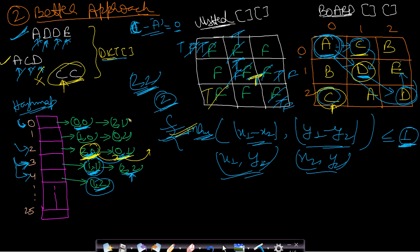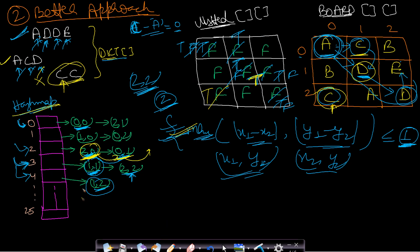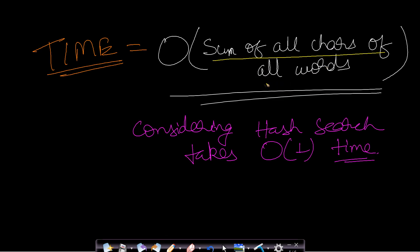The hash map improves performance over simple DFS. In the DFS approach you traverse the entire board for each first character. With the hash map, character lookup is O(1), and you don't need to compare all eight adjacent cells. The time complexity of the hash map approach is the sum of all characters across all words — O(total characters in dictionary).